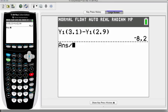And we get negative 8.2. Now we need to divide that by 0.2 which is the difference between 3.1 and 2.9. So in this case we got negative 41.